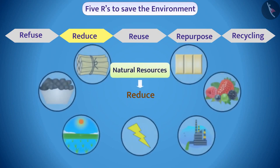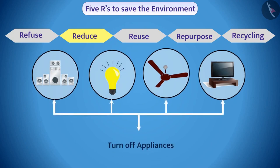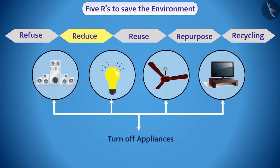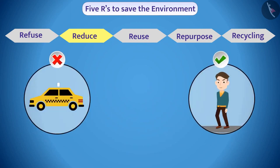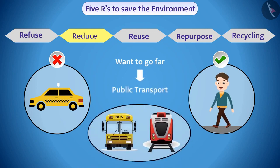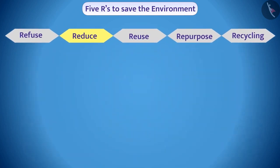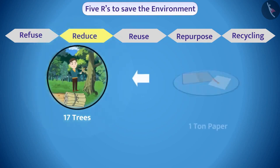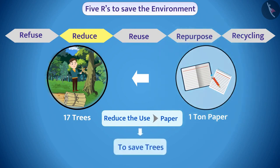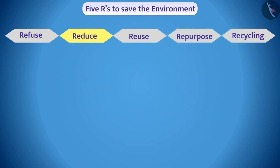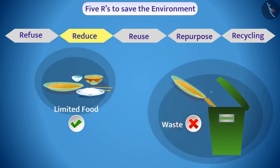The second R is Reduce. We should reduce the use of resources. For example, we can turn off appliances running on electricity when not in use. You can walk to nearby places instead of using a car, or use public transport for longer distances to save petroleum. Did you know that 17 trees are cut to produce one ton of paper? We can reduce the use of paper so trees can be saved.